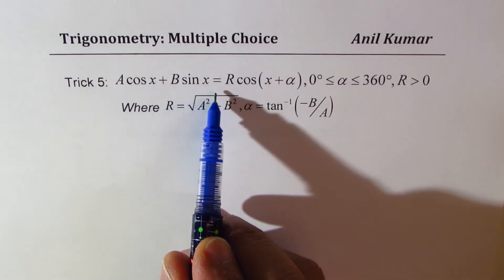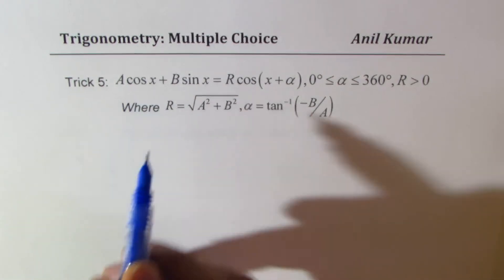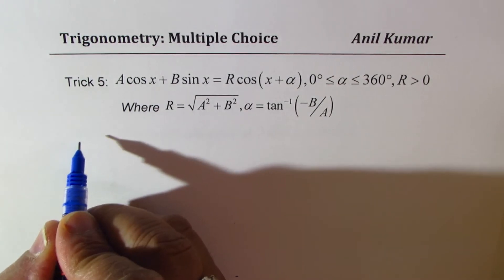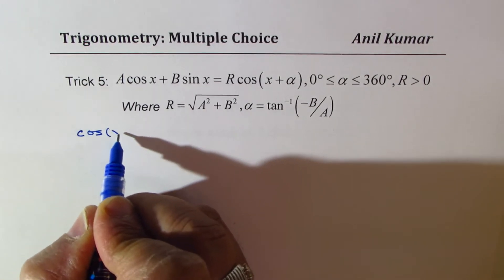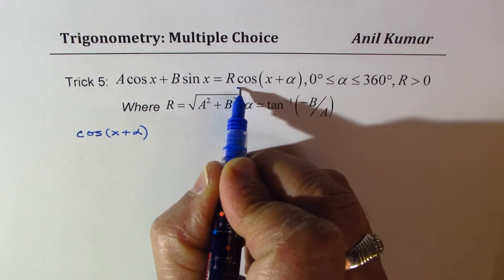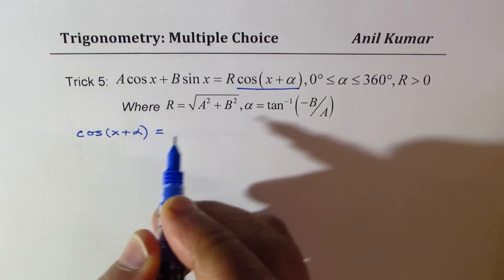A cos x plus B sin x equals R cos(x plus alpha). Let's begin with expanding the term cos(x plus alpha). That is a compound angle formula.